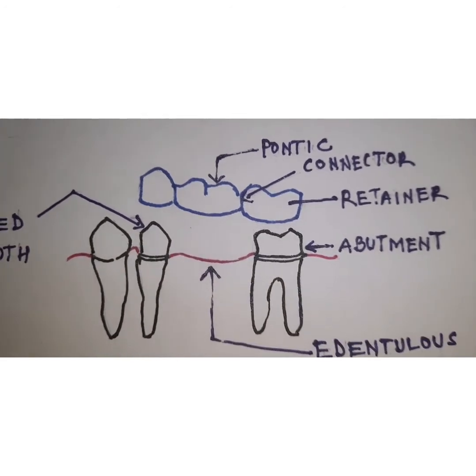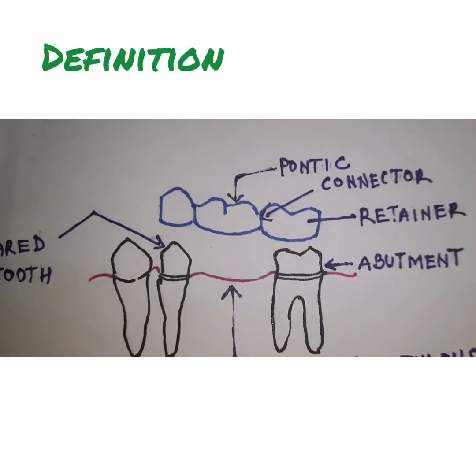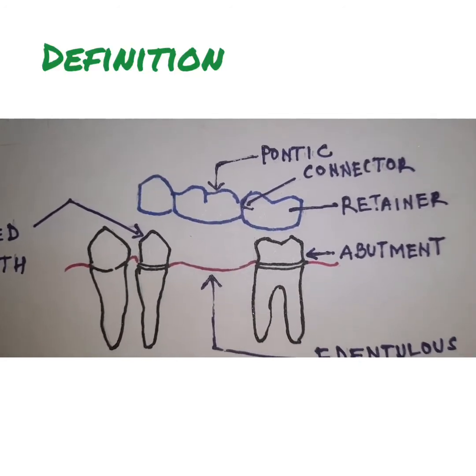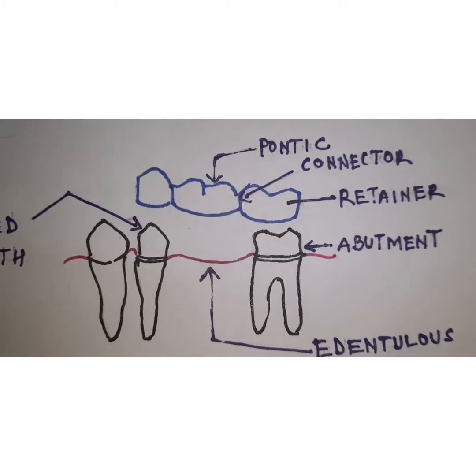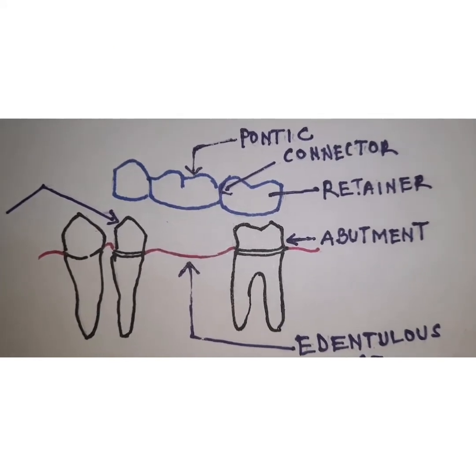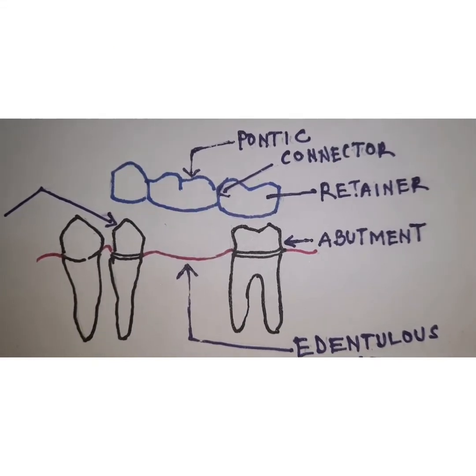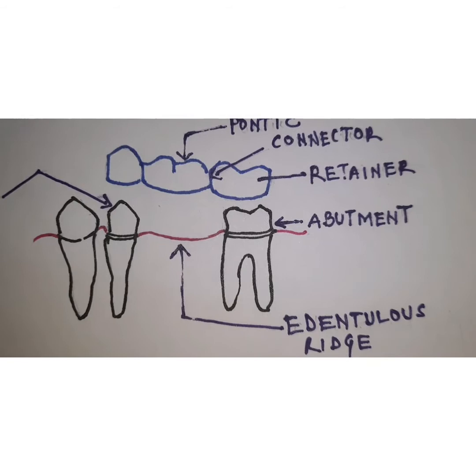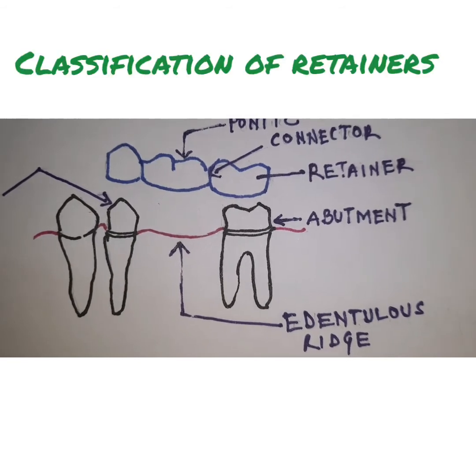By definition, a retainer is any type of device which is used for stabilization or retention of the prosthesis. Now let's look at the classification of retainers.